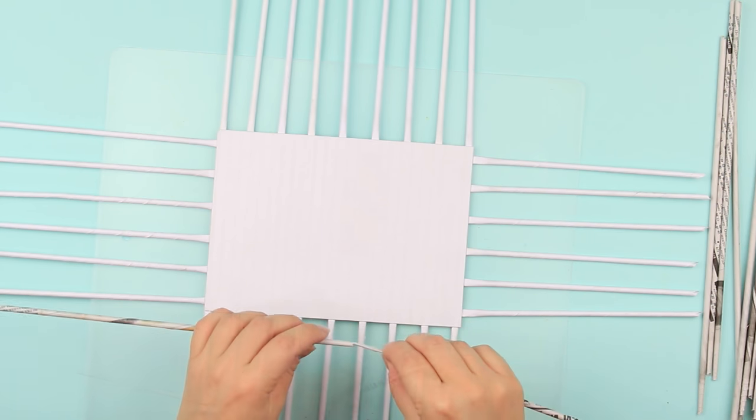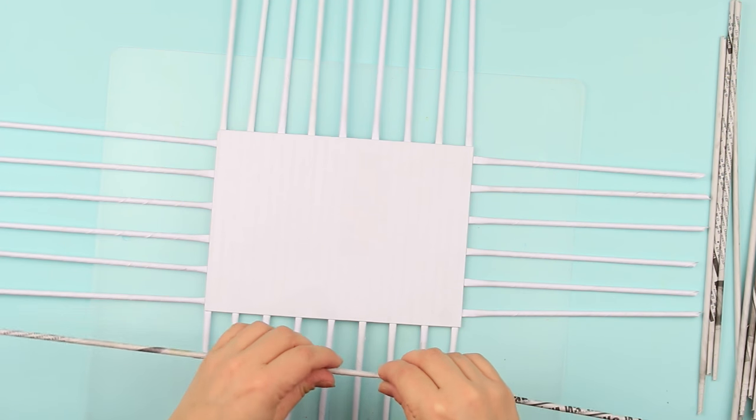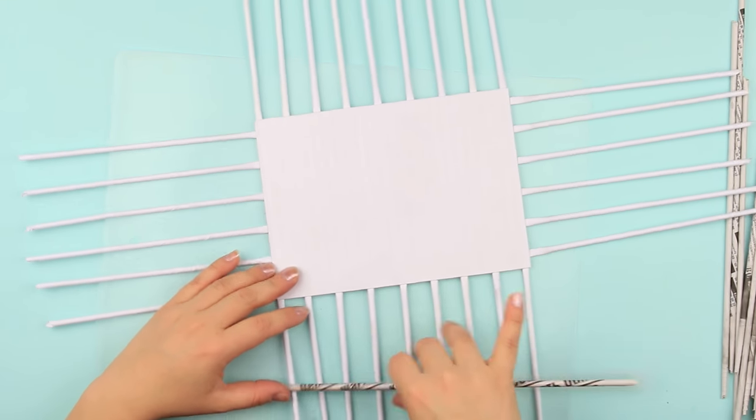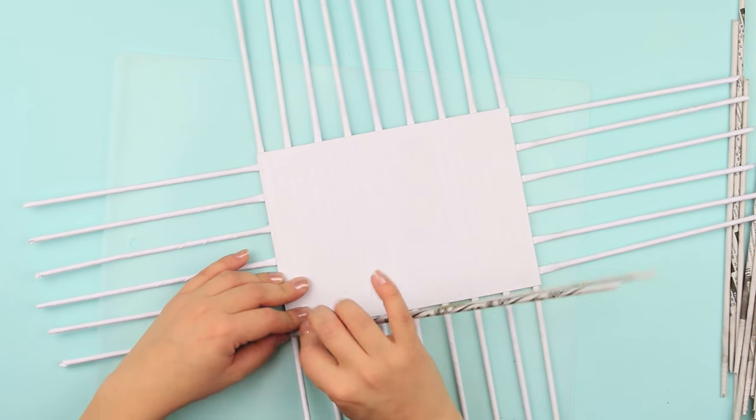Join two tubes together by putting one glued end into another. Bend the long tube in half and weave around the frame starting with a corner.